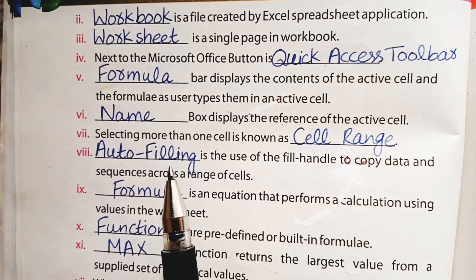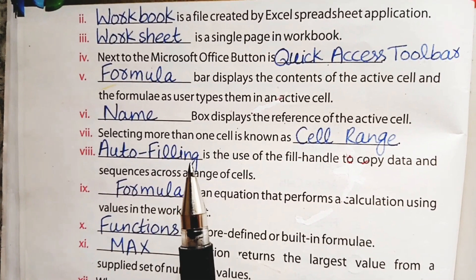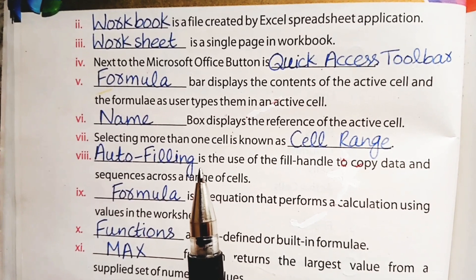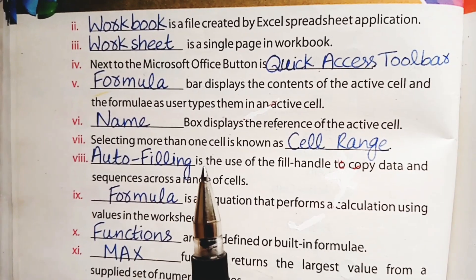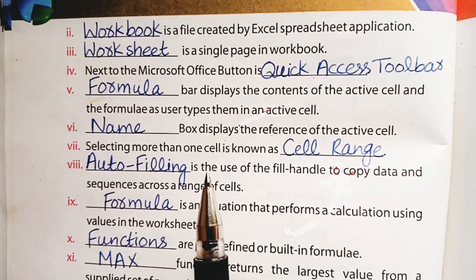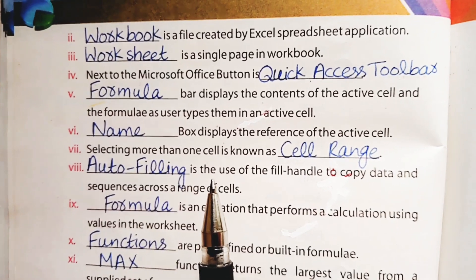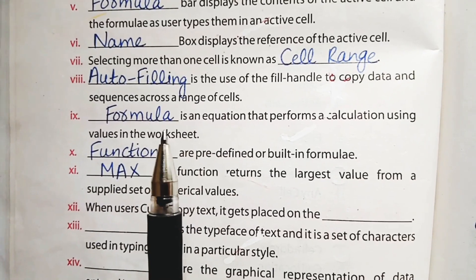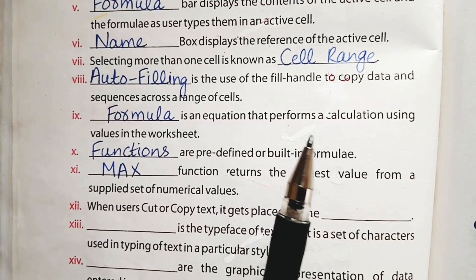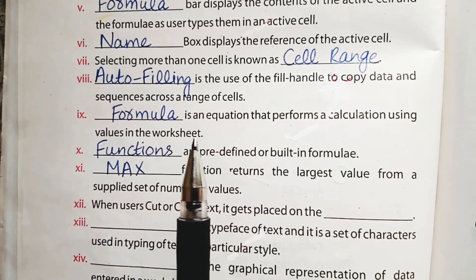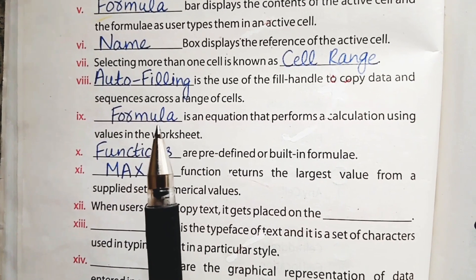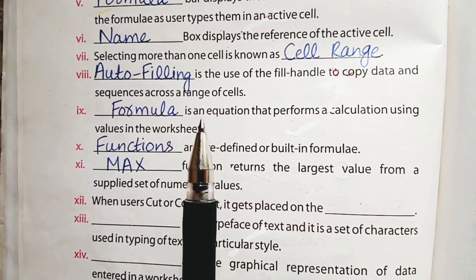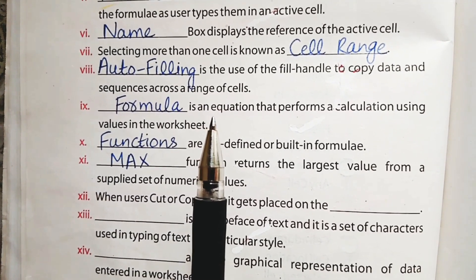We have discussed the auto-filling data feature of MS Excel. With this feature, we can automatically enter data sequences across a range of cells. Part number 9: Dash is an equation that performs a calculation using values in the worksheet. The answer is formula. A formula is basically an equation.